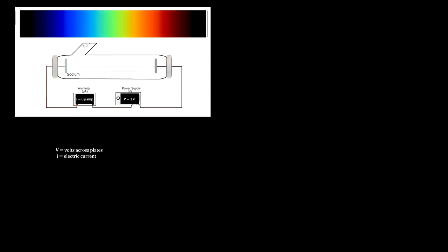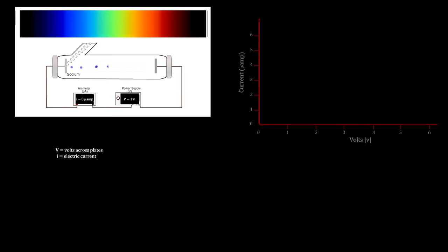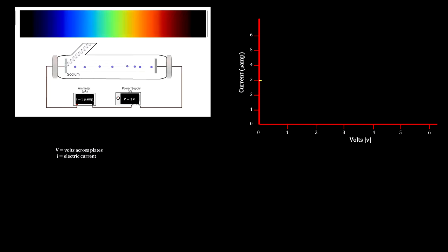When a light source shines on the emitting plate, energy is transferred from the light to electrons in the plate. If an electron gains enough energy to overcome the plate's binding energy, it will be dislodged. Furthermore, if such an electron has enough additional kinetic energy left to overcome the voltage, it will reach the other plate. This is then measured as an electric current.